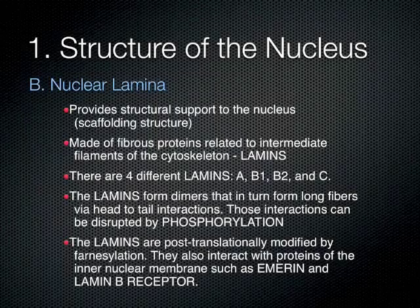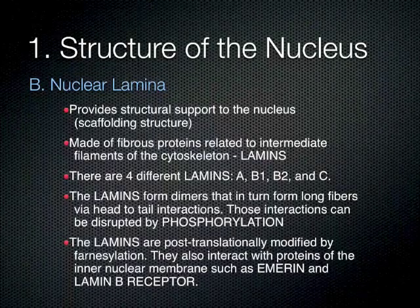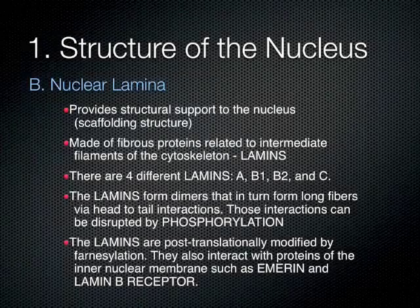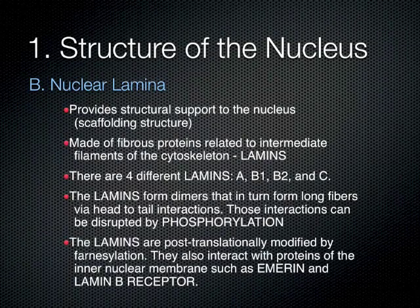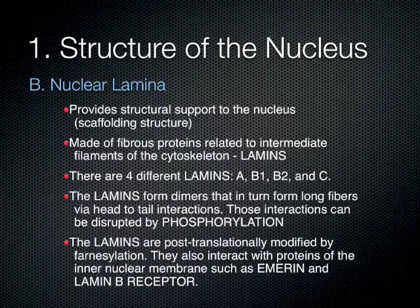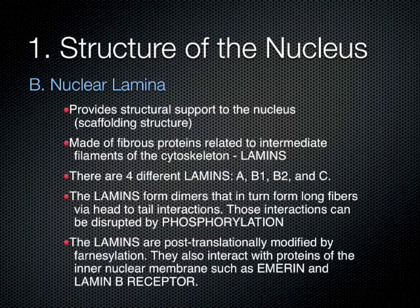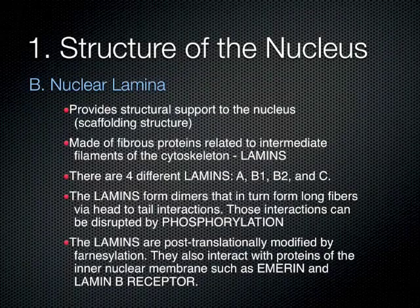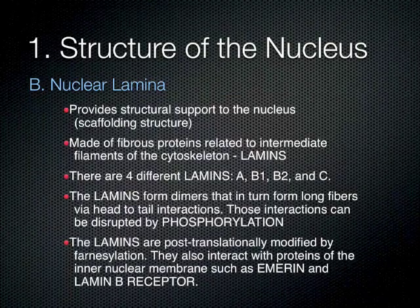The nuclear lamina is made of fibrous proteins related to intermediate filaments of the cytoskeleton, known as lamins — four types: lamin A, lamin B1, lamin B2, and lamin C. The lamins form dimers that in turn form long fibers via head-to-tail interactions. Importantly, those head-to-tail interactions can be disrupted by phosphorylation — if you phosphorylate the lamins, the interactions are disrupted and the whole supporting structure falls apart.